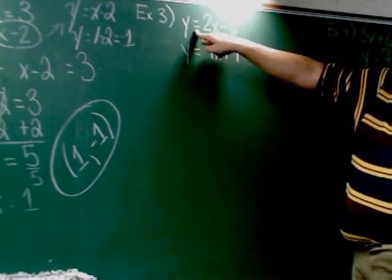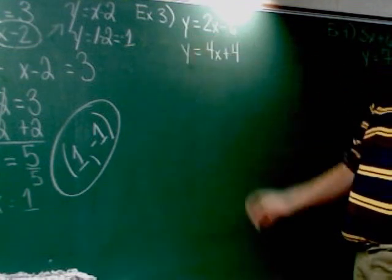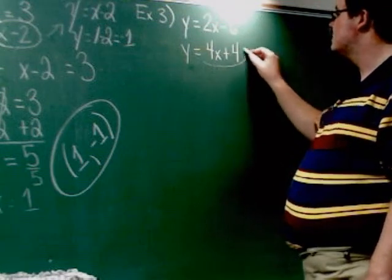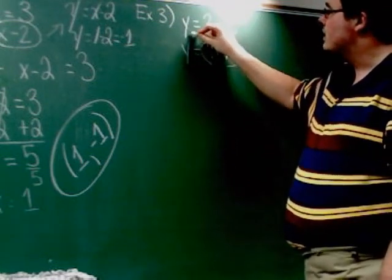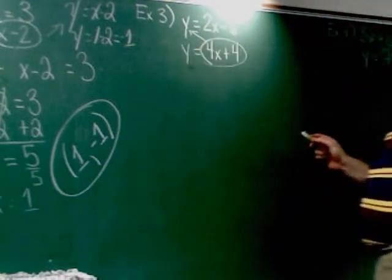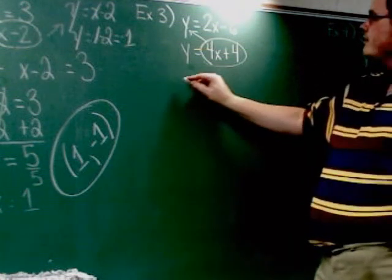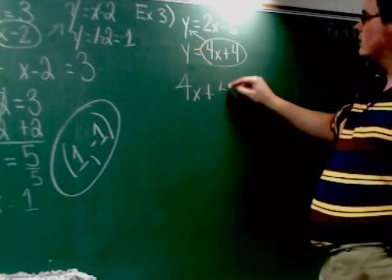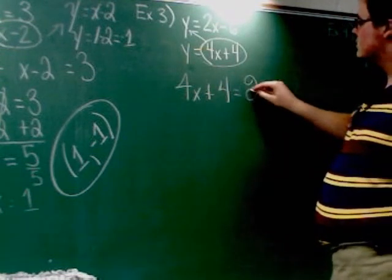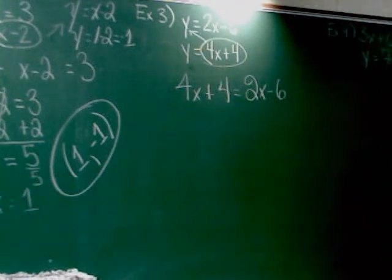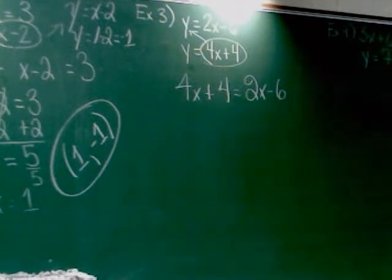Okay. Doesn't matter which one you choose. So, let's just go ahead and say I'm going to take this and plug it in right there. So, I've got 4x plus 4 equals 2x minus 6.